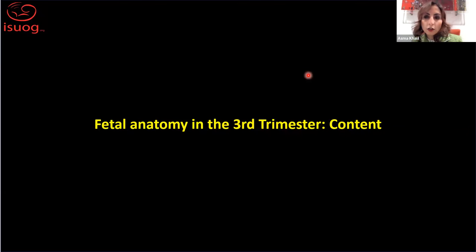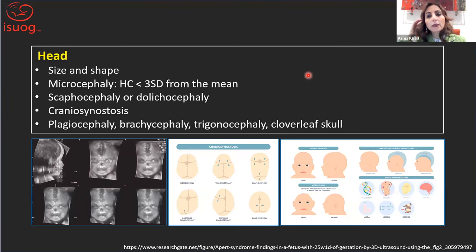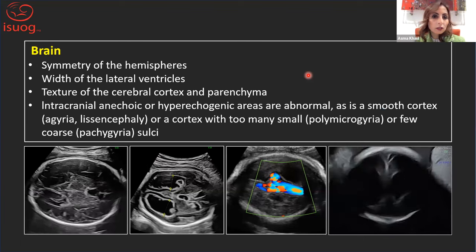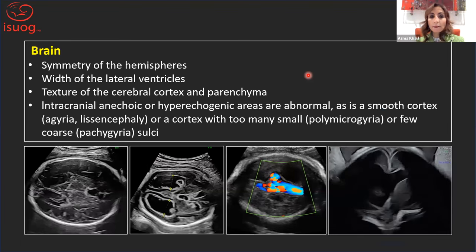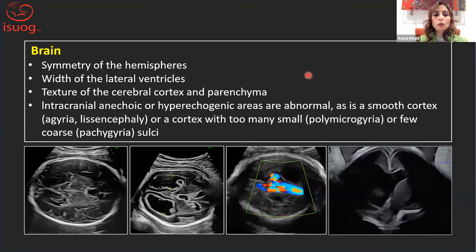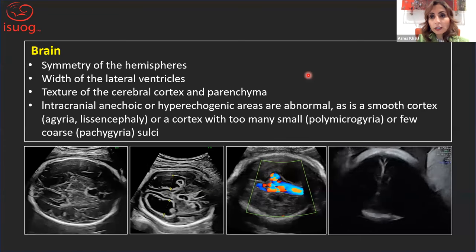If we perform fetal anatomy in the third trimester, what should we look at? Starting from the head: we assess size and shape, because microcephaly is diagnosed when head circumference is below three standard deviations from the mean, and we look at head shape because craniosynostosis is often first diagnosed in the third trimester. For the brain, we look at symmetry of the hemispheres, ventricles for ventriculomegaly, and the texture of the cortex and parenchyma — we should not expect intracranial anechoic areas at this stage, so we look for lissencephaly, polymicrogyria, agyria, or destructive lesions.